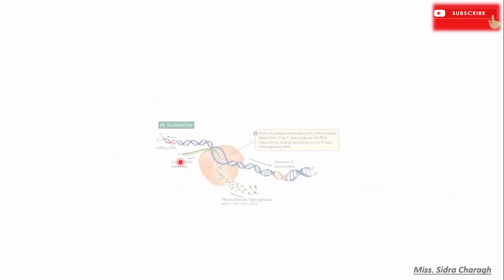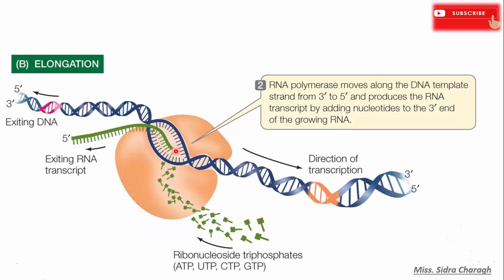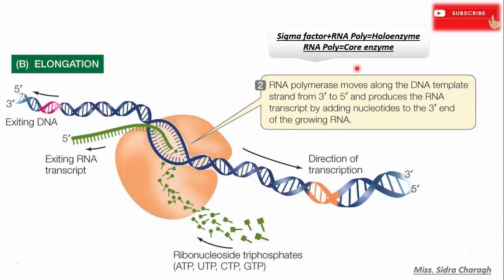RNA polymerase binds to the promoter and starts to unwind the DNA strand. Once transcription has started, the sigma factor of RNA polymerase is released and the remaining part of the enzyme, called the core enzyme, moves along the template strand to complete the process of transcription. The DNA strand opens up at the place where the enzyme is attached, forming the transcription bubble.